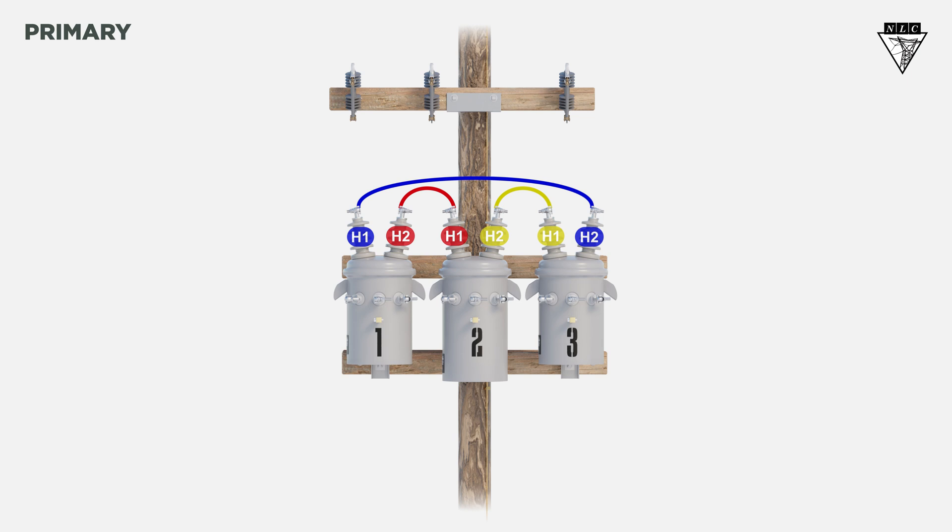Then, run jumpers from each H2 bushing up to a phase. These connections create a delta configuration on the primary side.